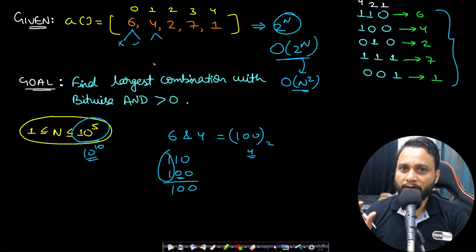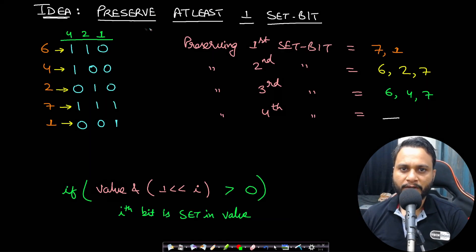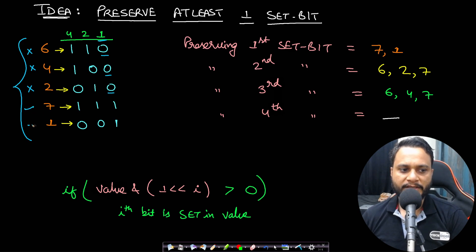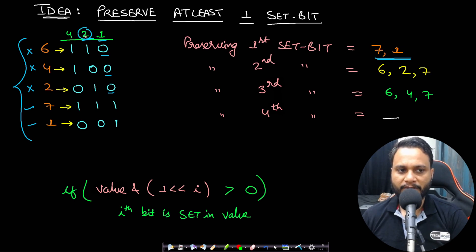What we need to do is find a combination with at least one set bit. Let's try to preserve the first set bit — what items can we take such that the bitwise AND is always greater than zero? If we try to preserve the first bit, we cannot take 6, 4, or 2 because they all have zero at that bit position. We can take 7 and 1, giving a combination of size 2.